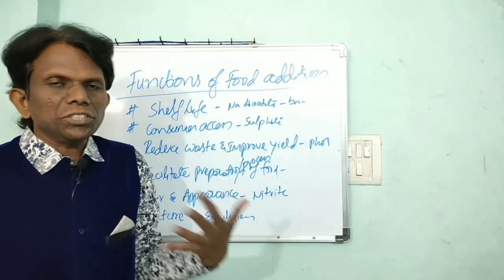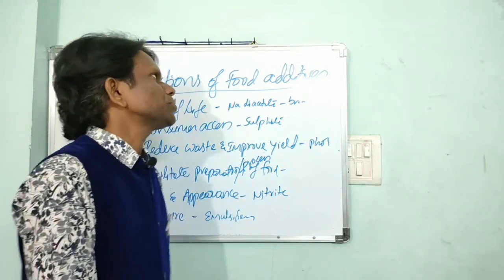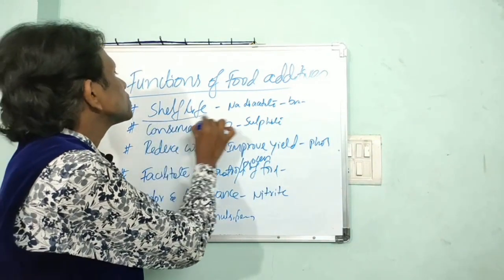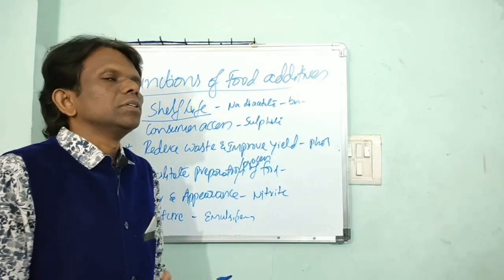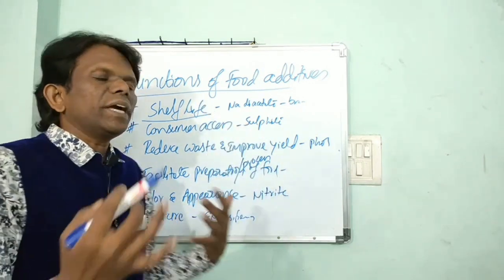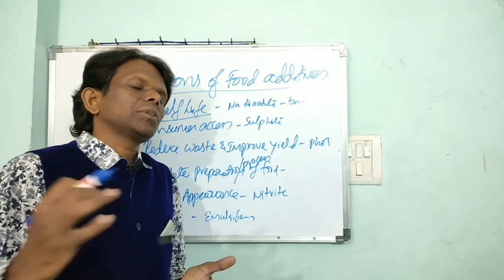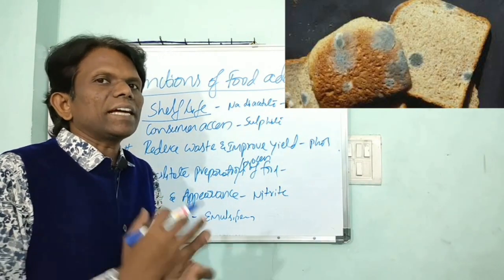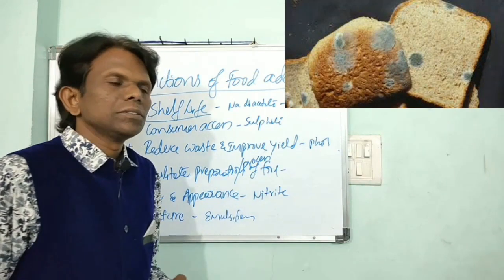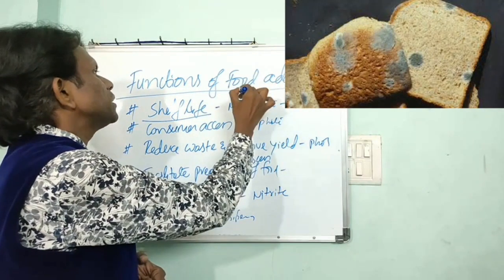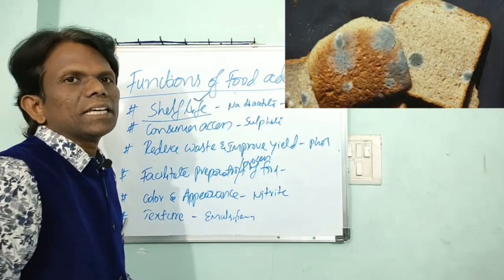Now let us discuss the functions of food additives. The first function is to increase the shelf life. For example, if we add sodium diacetate or potassium diacetate to baked foods, we can extend the shelf life up to one week or ten days.